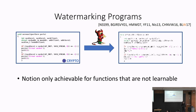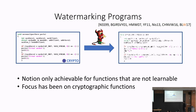Any circuit class that is learnable cannot be watermarked, because if the watermarking algorithm outputs a functionality-preserving circuit and you can efficiently learn the function, then you can learn the unmarked version and thus remove the watermark. As a result, most work on constructing watermarking schemes has focused on watermarking natural classes of non-learnable functions.